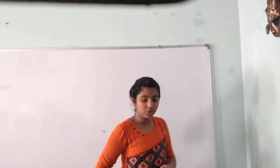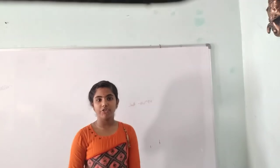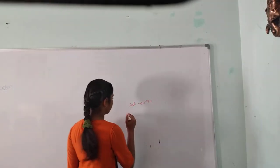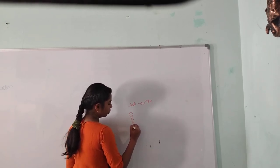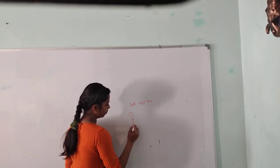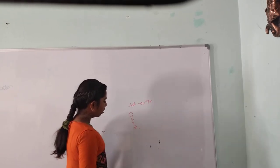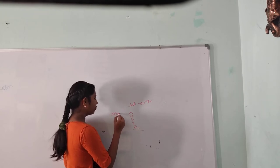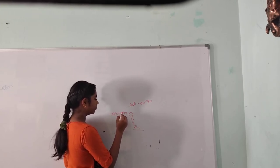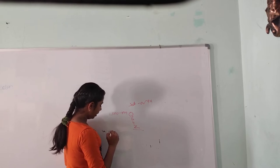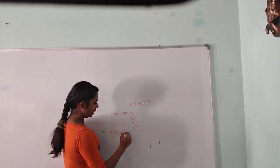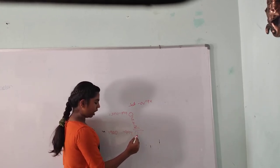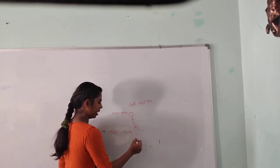Now I will explain the century code. In century code, we have a repeating format: 0, 6, 4, 2 — and this pattern continues. So 0 applies to 1500–1599, and again 1900–1999 gets 0. And 2000–2099 gets 6.